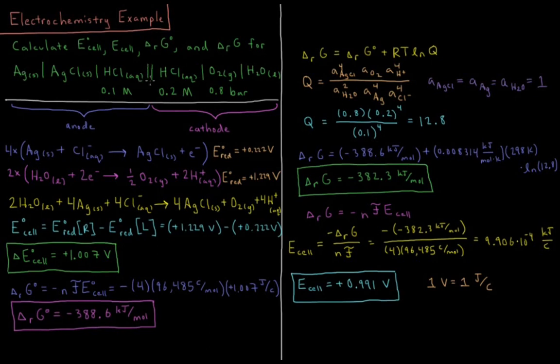So first thing, I see the salt bridge in the middle. So I know that I have my anode on the left and my cathode on the right, oxidation occurring at the anode and reduction occurring at the cathode. The problem also indicates that the HCl here is at 0.1 molar, the HCl here is 0.2 molar, and the oxygen here is at a fugacity of 0.8 bar. I don't need to worry about the activity of the silver, silver chloride, or H2O because those are liquids and solids which are going to always have an activity that's assumed to be one.